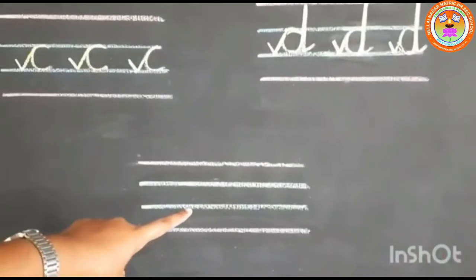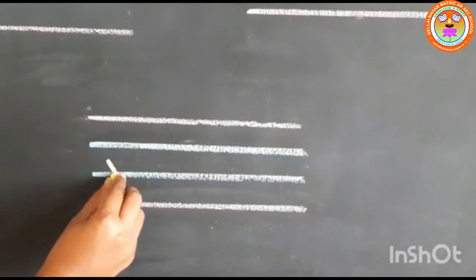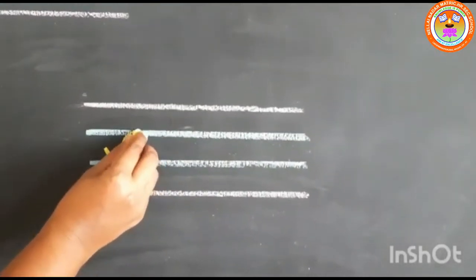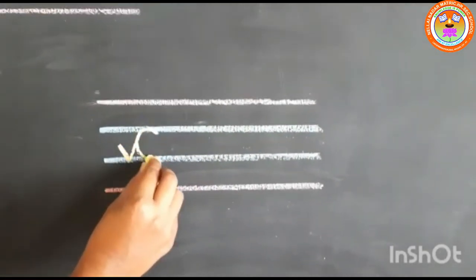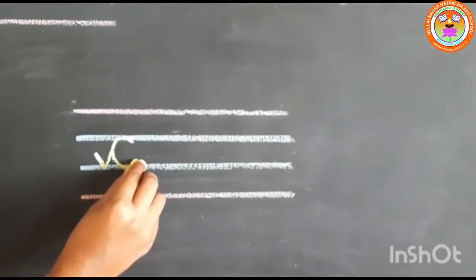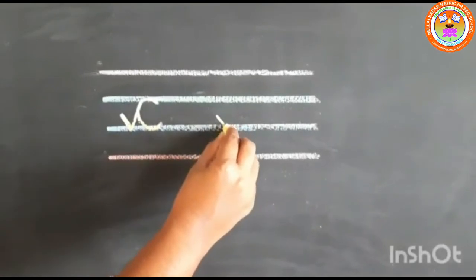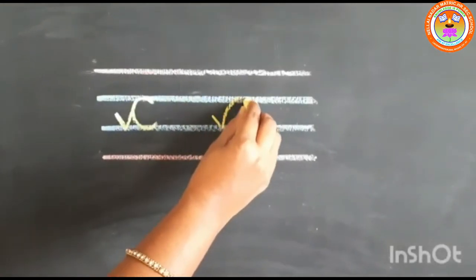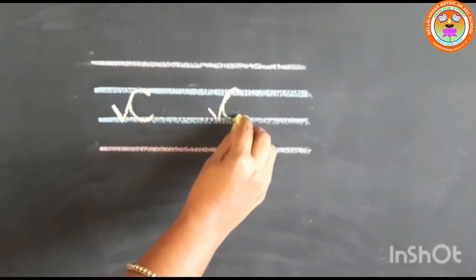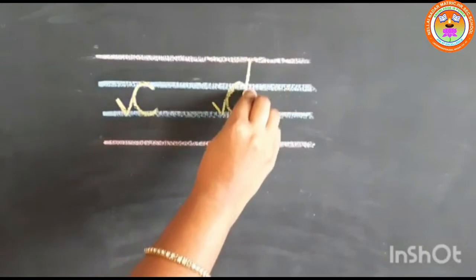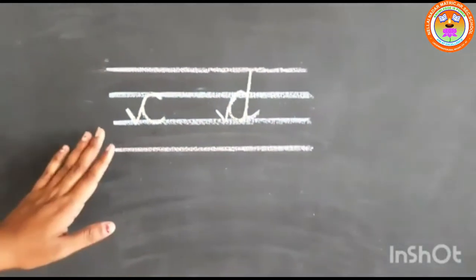Now we will write in this line. First we will write letter C: put small tick, curve on the top and same line come back and stop here. This is small letter cursive C. Now we will write letter D: first write letter C and go up, touch the red line, come back and put tail. Now we finished here.